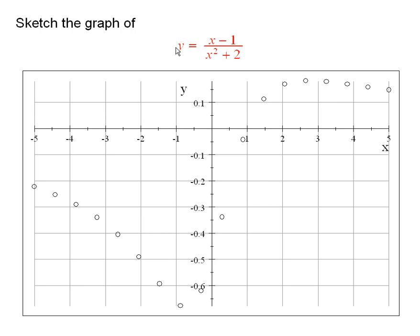I want to sketch the graph of this function, y equals x minus 1 over x squared plus 2. Now, what we do is we find ordered pairs and graph the ordered pairs.